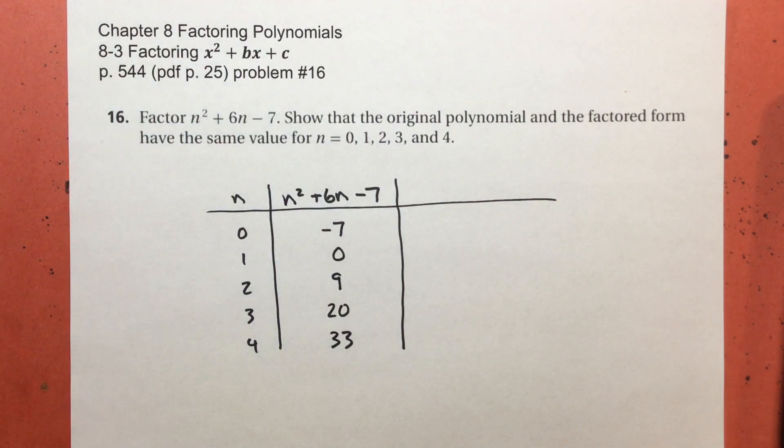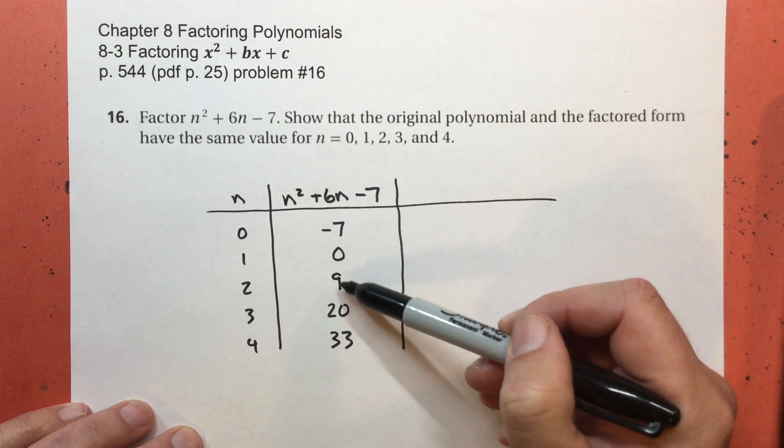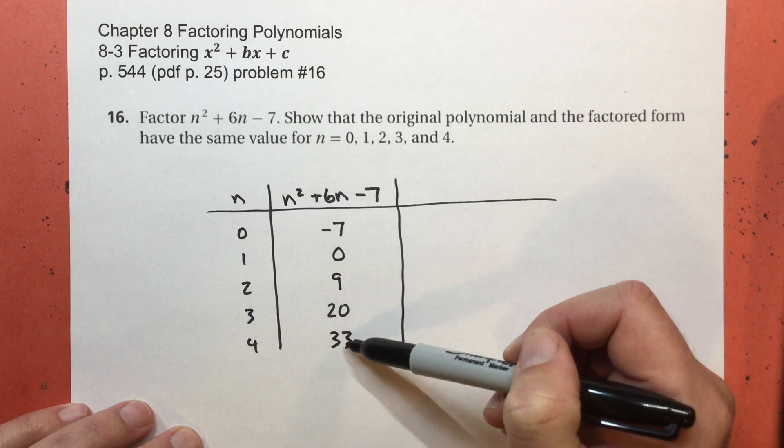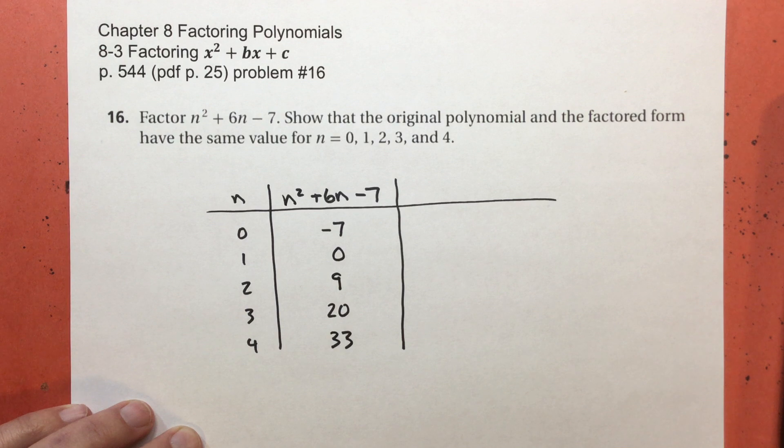There's also something else, but we're going to learn about this in chapter 9. Negative 7 plus 7 is 0. Plus 9 is 9. Plus 11 is 20. Plus 13 is 33. There's a pattern there. But we'll get to that later in chapter 9.